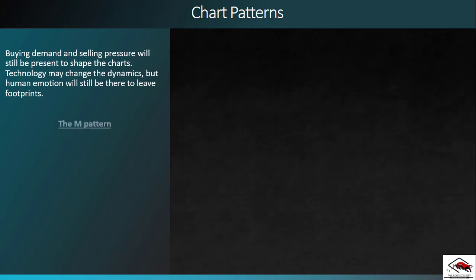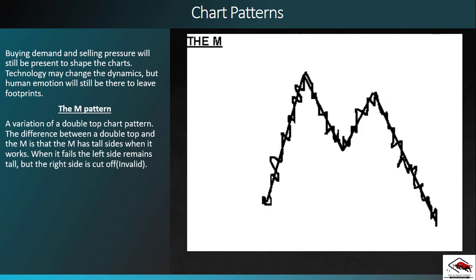Let's start off with the M formation. The M is a variation of a double top chart pattern. The difference between a double top and the M is that the M has tall sides when it works, and when it fails the left side still remains tall but the right side is basically cut off, making the M formation invalid. The takeoff price is where the uptrend begins to lead the M. The run-up of the M is often a straight line affair — a very rapid, sharp move rather than a rounded consolidation to the downside.